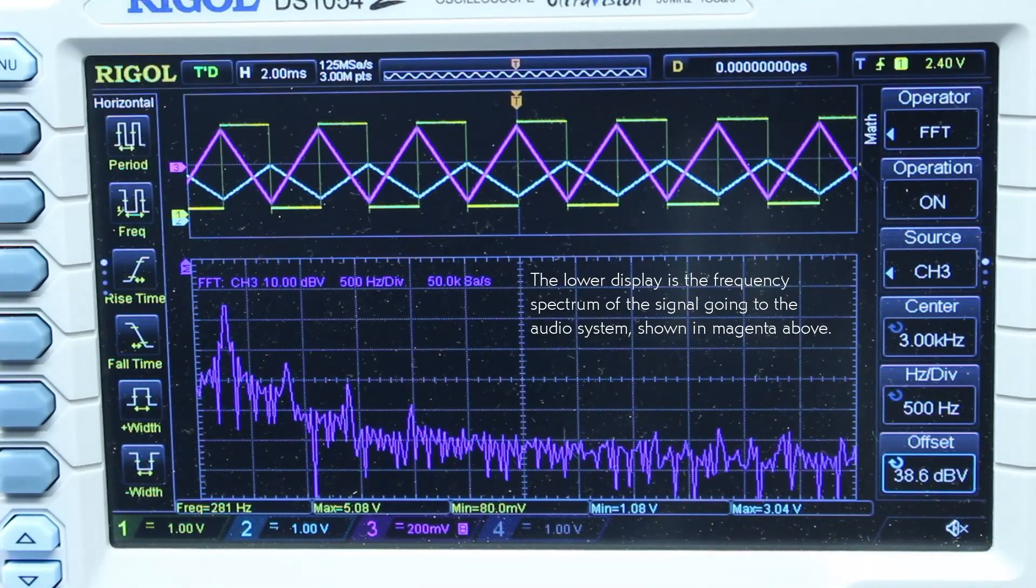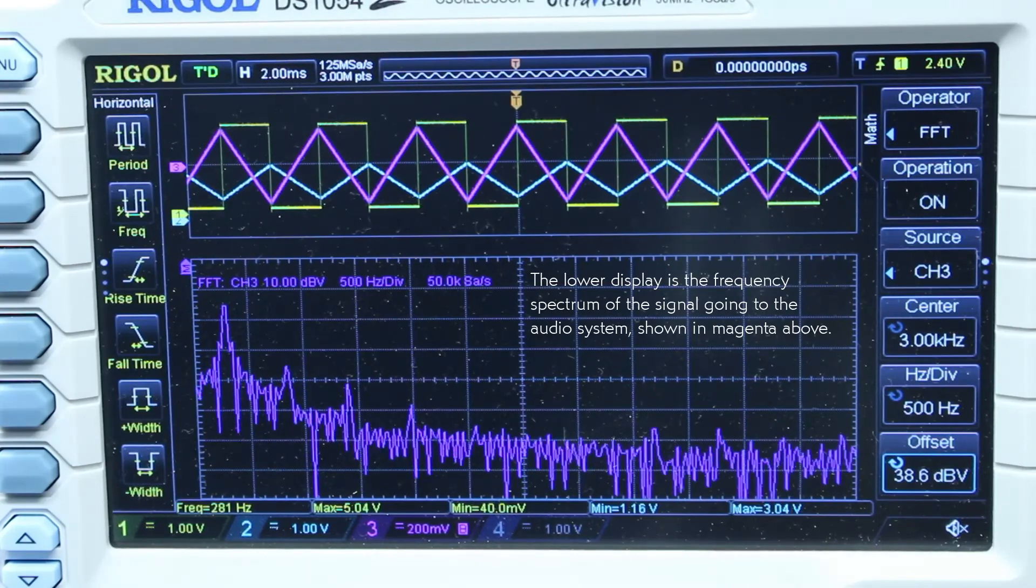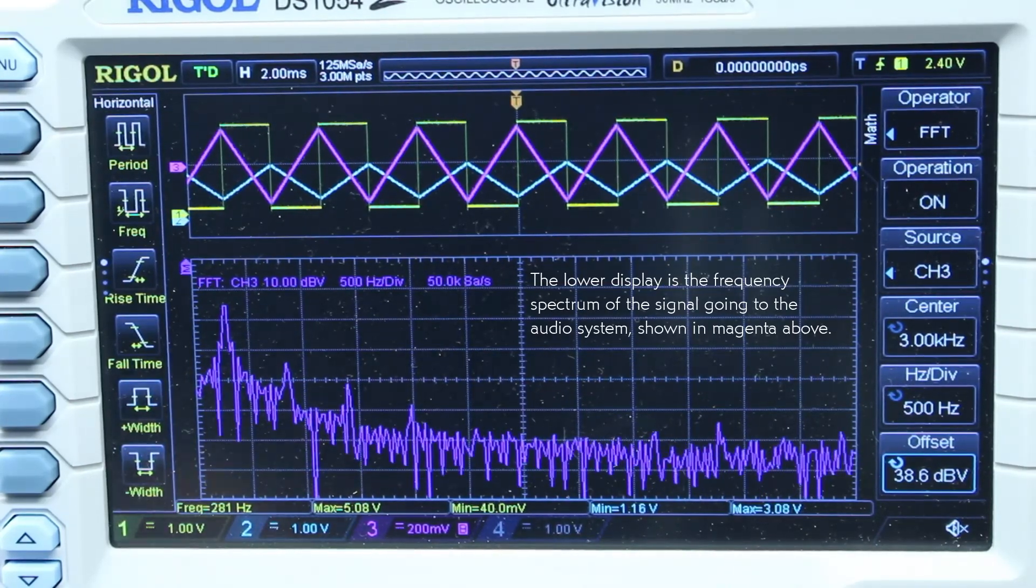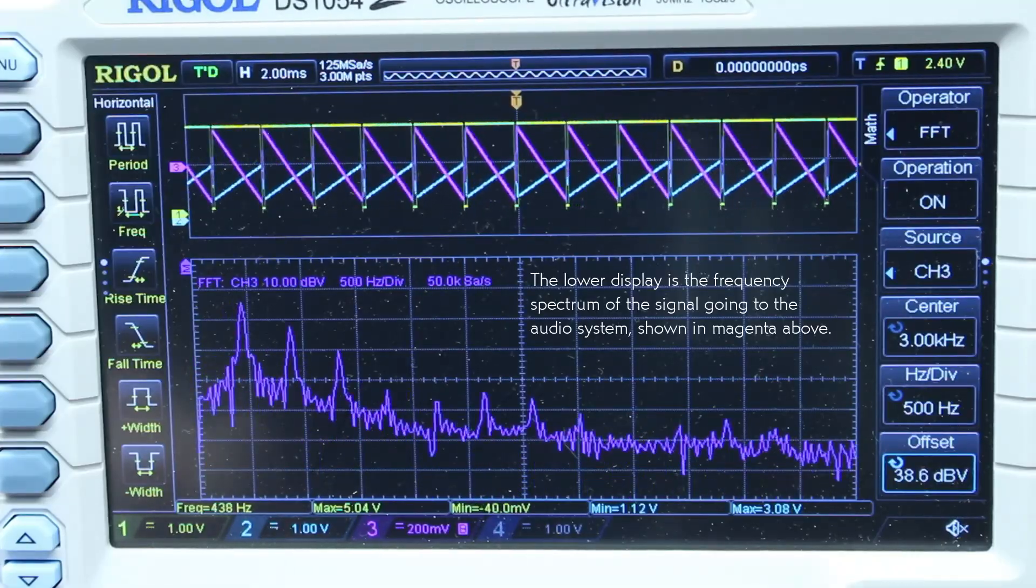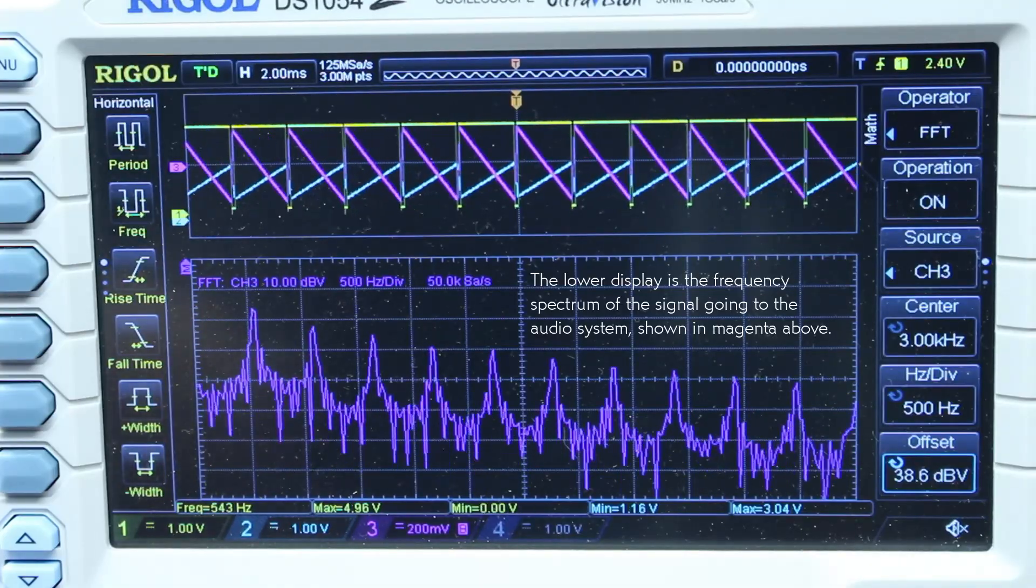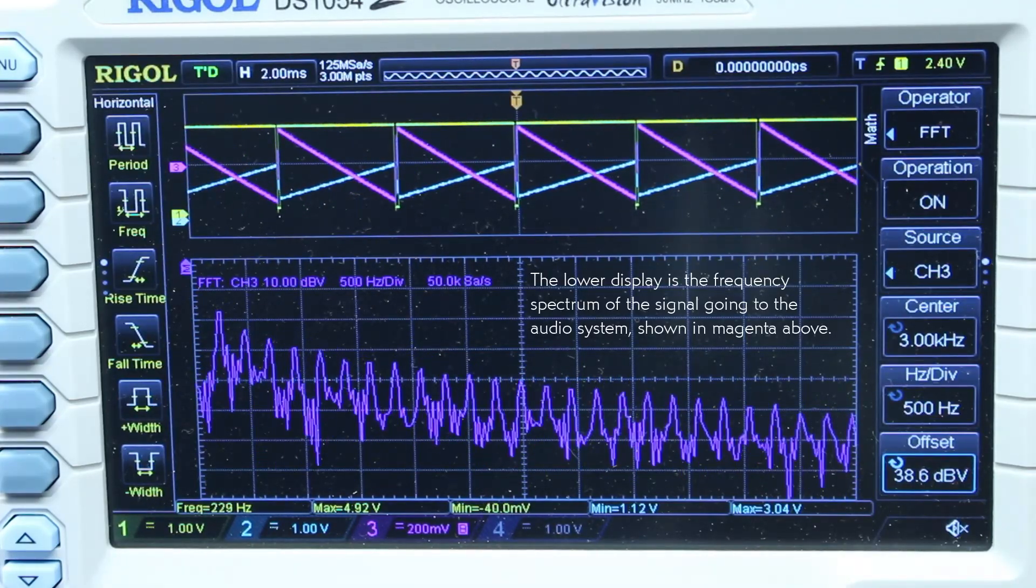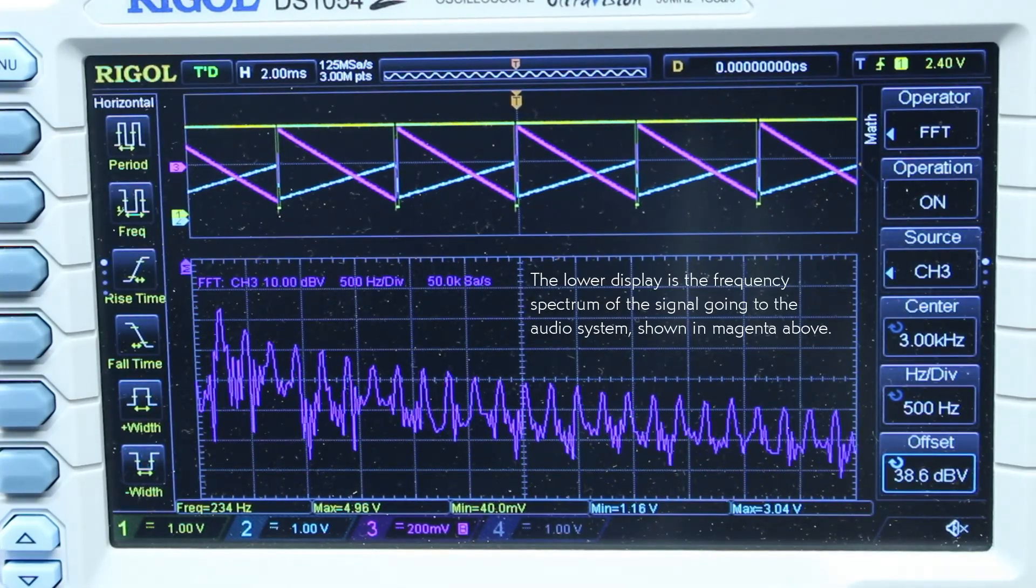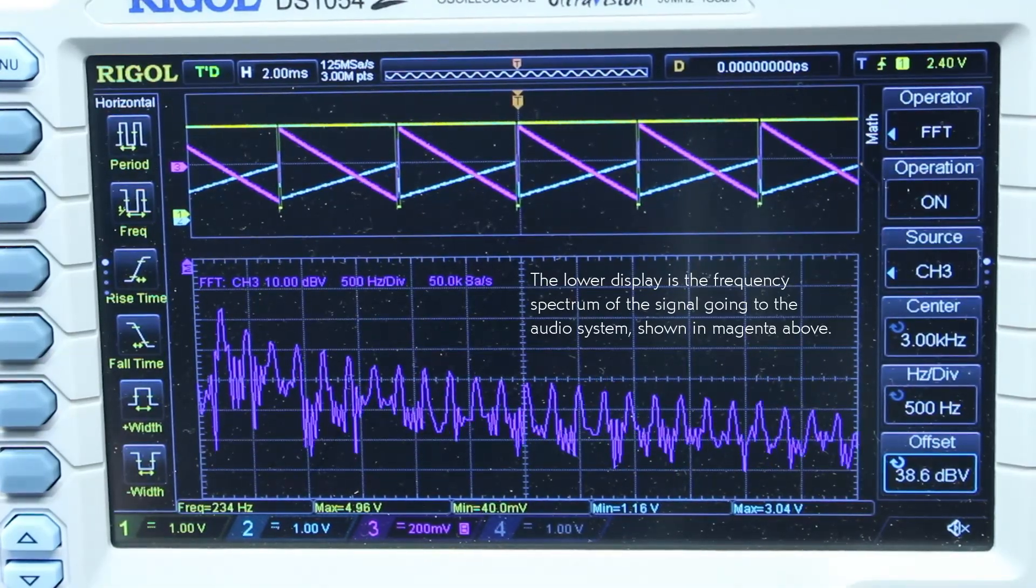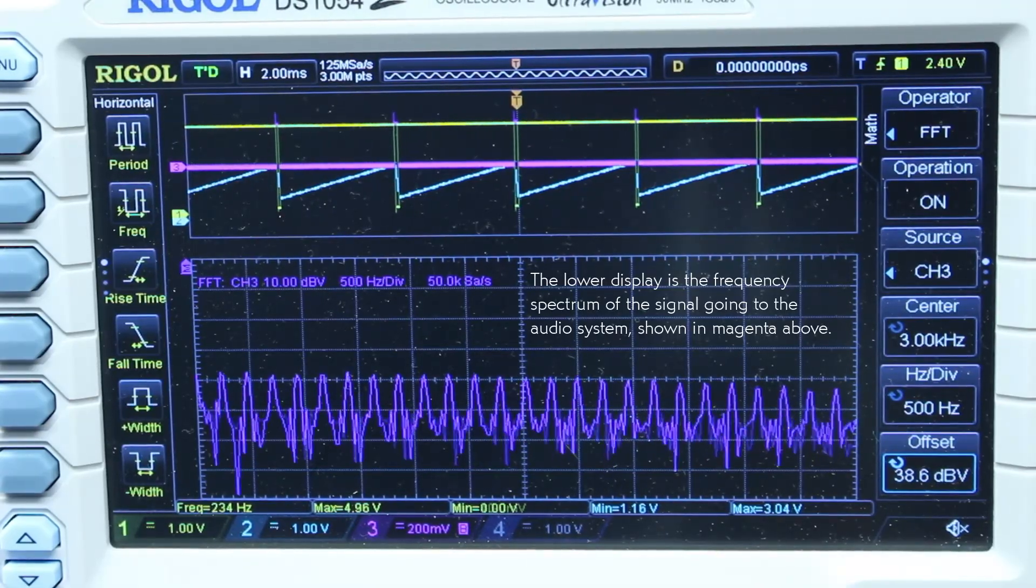I can also adjust the duty cycle of the square wave or the shape of the triangle wave to get a ramp and a pulse train. The ramp has the characteristic rough, buzzy sound and the pulse train has nearly equal values of very many harmonics.